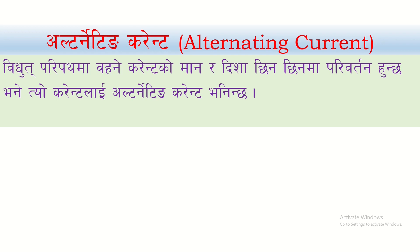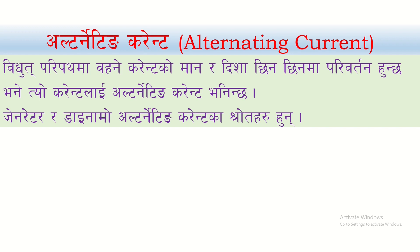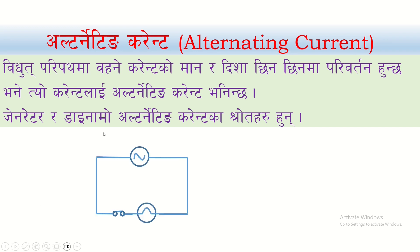To see the alternating current, we look at the generator and the dynamo — that is the beginning of alternating current. In this image, I show the alternating current generator and dynamo. I will show you the bulb and turn on the current. You can get this current — it flows in both directions.